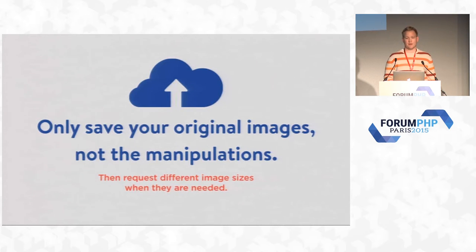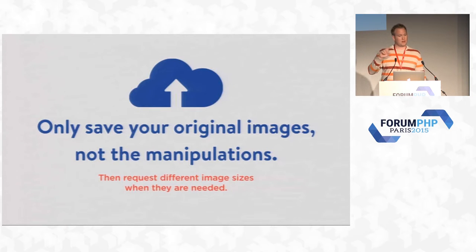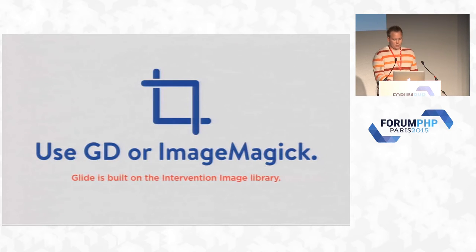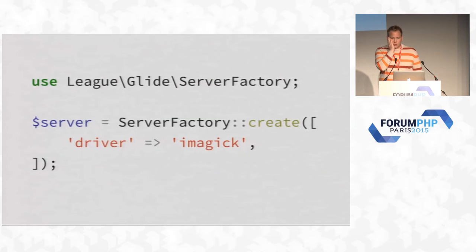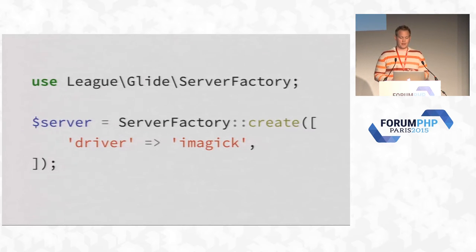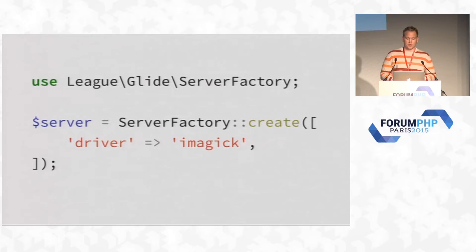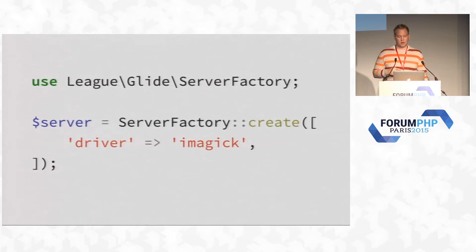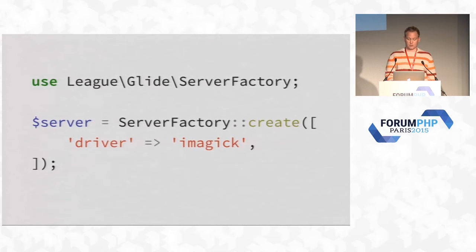You can use GD or ImageMagick because Glide supports both through Intervention. Here's a bit of code on how you'd actually set it up. You can build Glide manually and inject all the dependencies, but it comes packaged with a server factory. The server is the main object that configures everything. The driver parameter — you just change that to imagick, which is the PHP extension for ImageMagick — that's how you switch to ImageMagick.